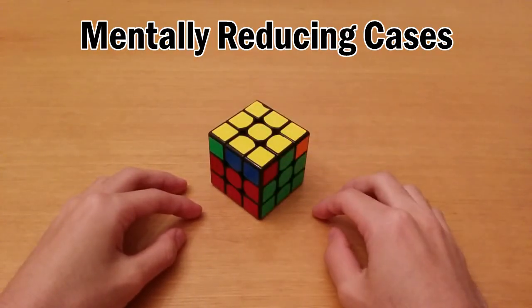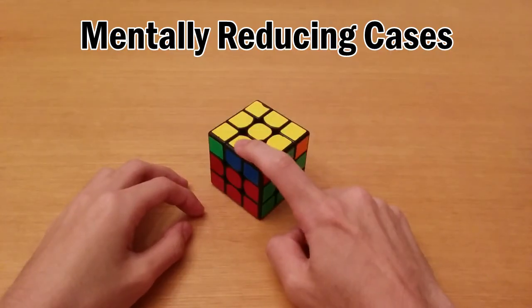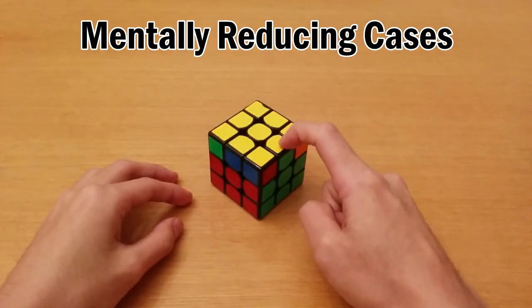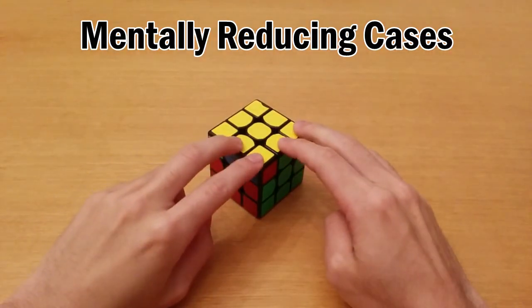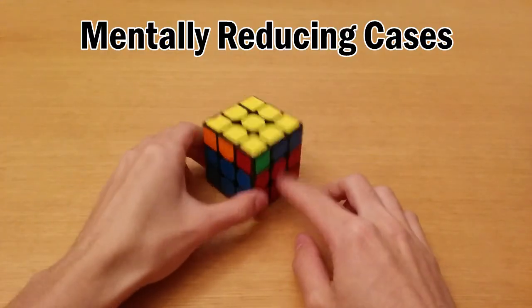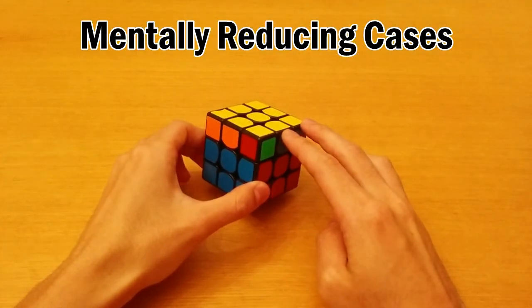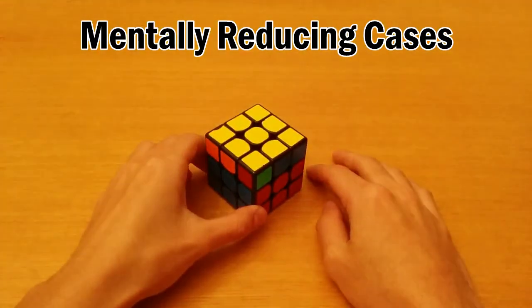So again we have diagonal PLL and if you only see one block here then it has to be a Y-perm and if you see a full block here obviously it's a V-perm. If you see two blocks it's an N-perm. And if you see a block here on the side only no block here then it has to be a V-perm and two blocks is obviously a Y-perm.